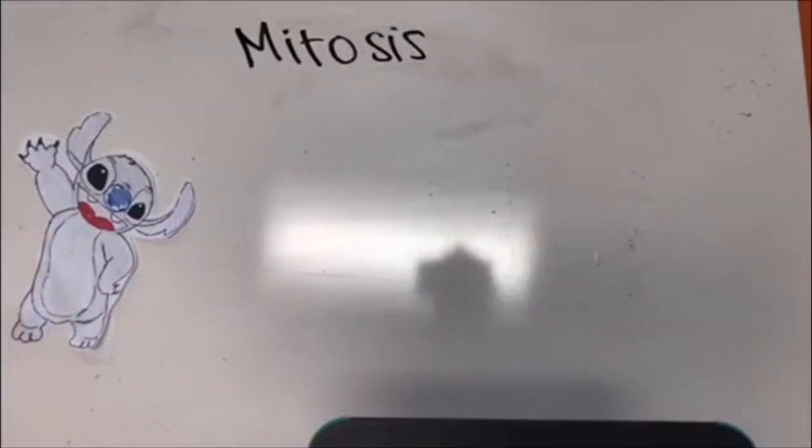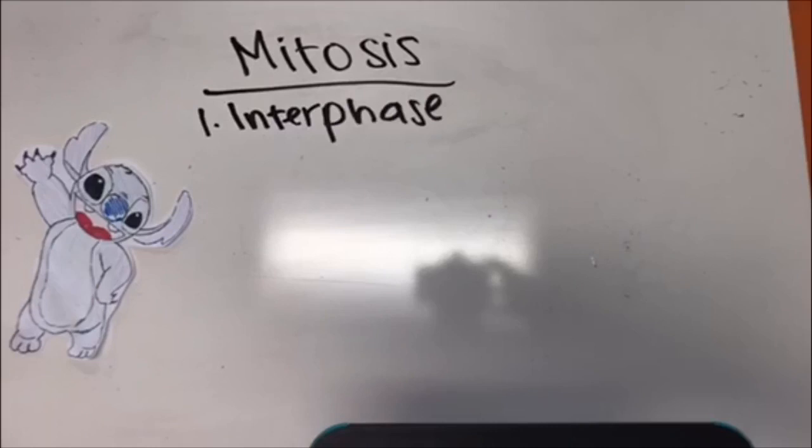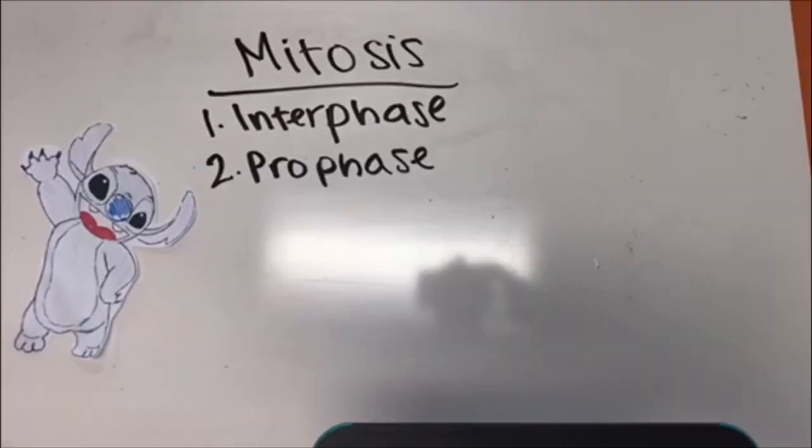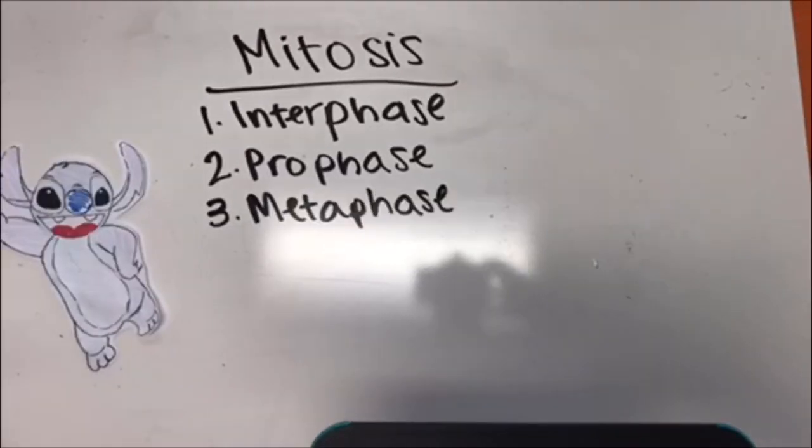Anyway, that was mitosis. To recap, the first step is interphase, which essentially prepares the cell for mitosis. The second step is prophase, where the chromosomes become visible while the chromatids are pulled together. The nuclear envelope disappears in this step. In the third step, metaphase, the chromosomes are attached to the spindle fibers.